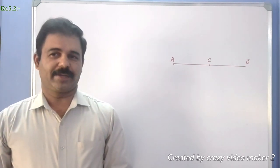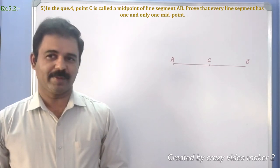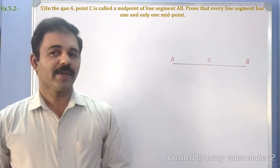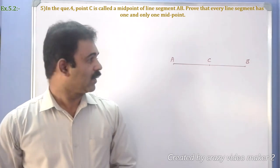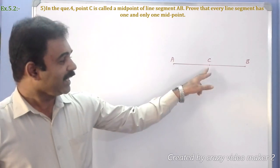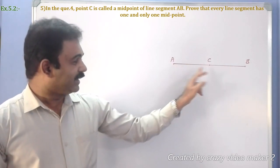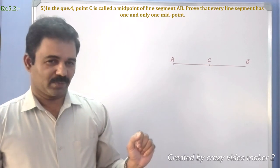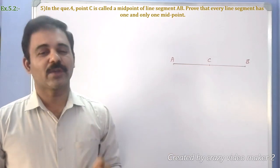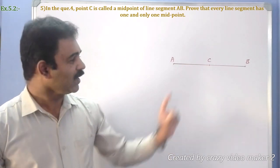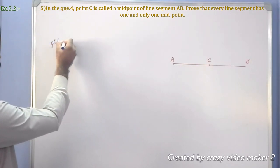Taking question number 5: in question 4, point C is called the midpoint of segment AB. Prove that every line segment has one and only one midpoint. We see the midpoint of AB — if AC equals half of AB, C is the midpoint. We need to prove every line segment has one and only one midpoint. Taking the same figure for the solution.